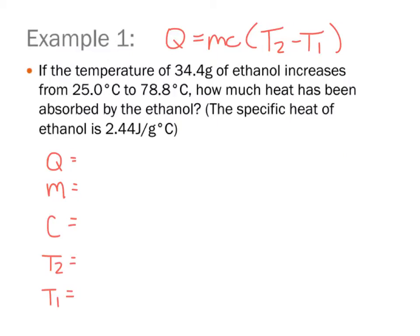So in this first example, if we read the problem and label as we go, it kind of helps us find the givens that we have so that we can figure out what exactly we still need to figure out. So if the temperature of 34.4 grams, grams is always mass, of ethanol,